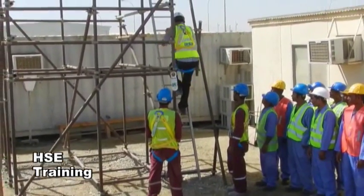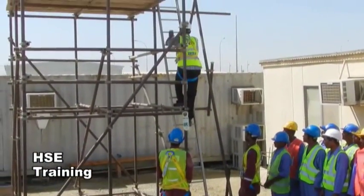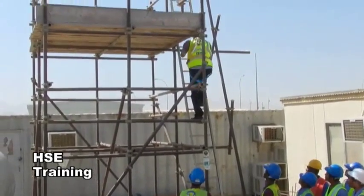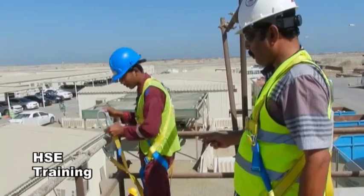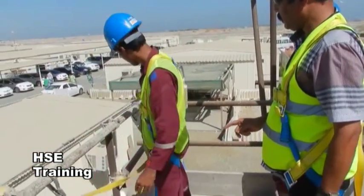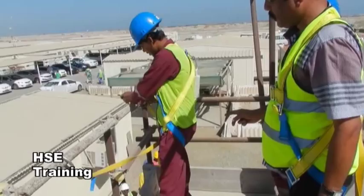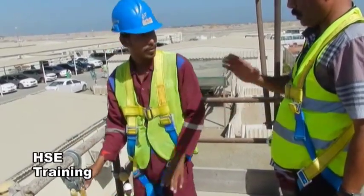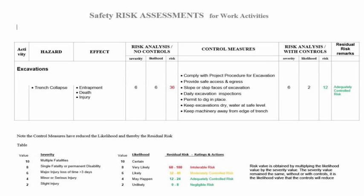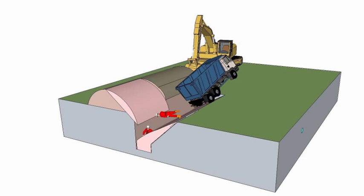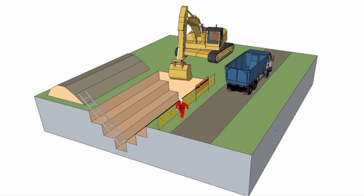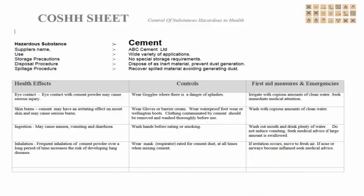Four: Electrocutions, resulting from striking buried electrical cables or contact with overhead cables. Type of injury: burns and death by electrocution. Preventative measures: scanning and ascertaining location of buried cables, erecting goal posts and barriers along the route of overhead cables.